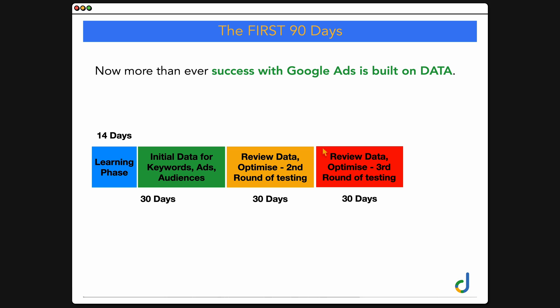It's only around 90 days — the absolute earliest — before we'd look at adding in higher-level optimizations, like switching over to a maximize conversions bidding strategy. So especially in this first 90 days, it's very much about collecting initial data and running initial testing. Then at our 90-day review, we just continue this cycle.